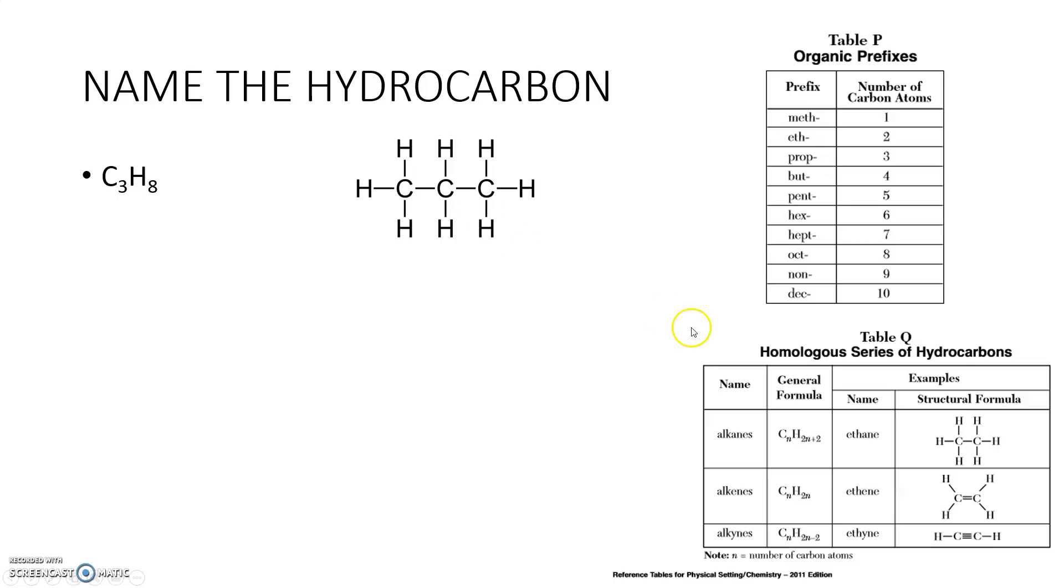So I think about that for a moment. I go to table Q and I know that since I have single bonds, it's got to be an alkane. But what's his true name? So three carbons, come over here. Three carbons means prop. So I'm going to give the prefix prop and the ending A-N to signify that it's an alkane, and this guy's name is propane.